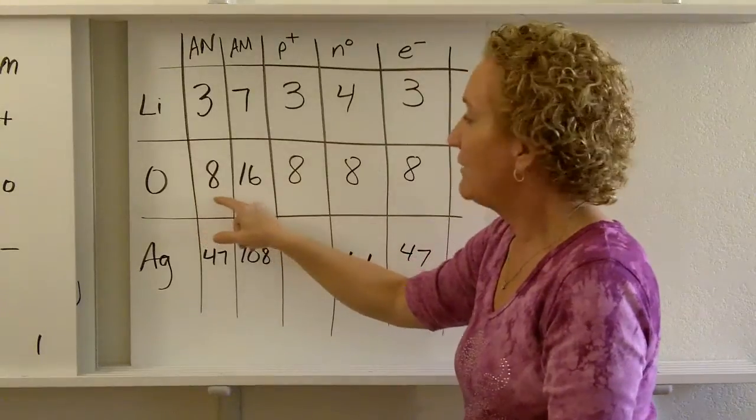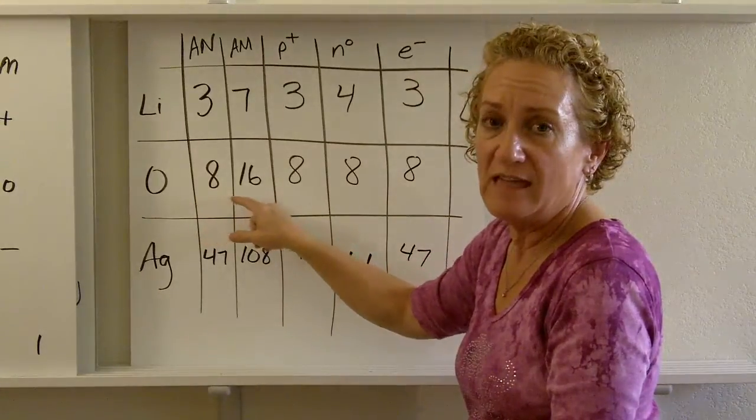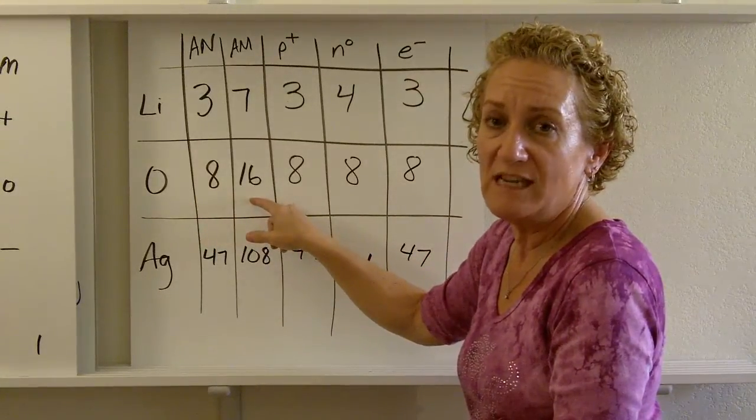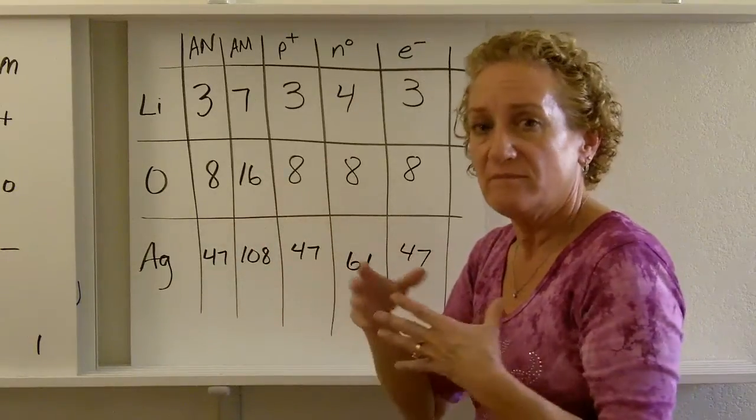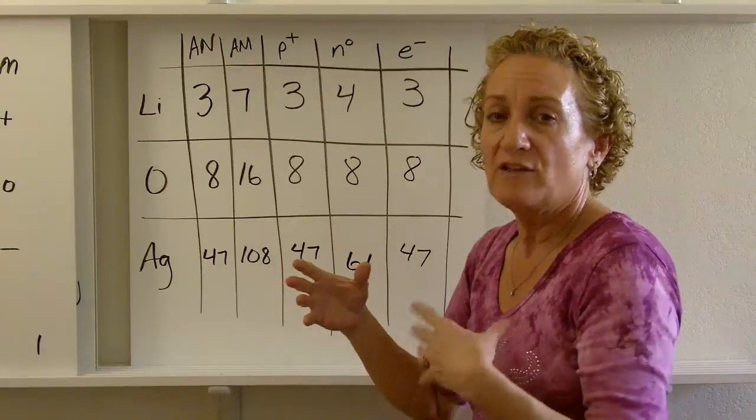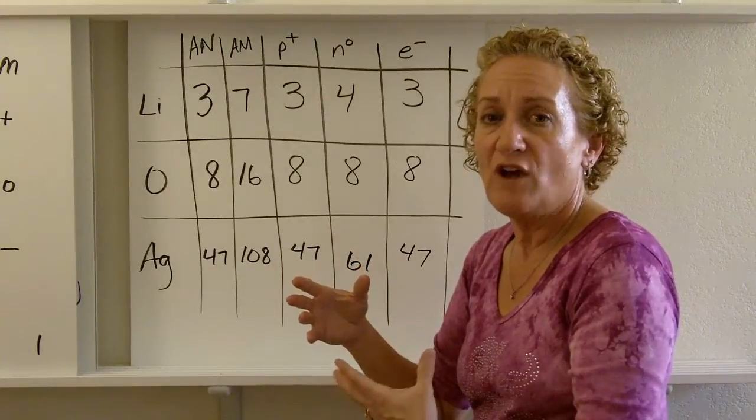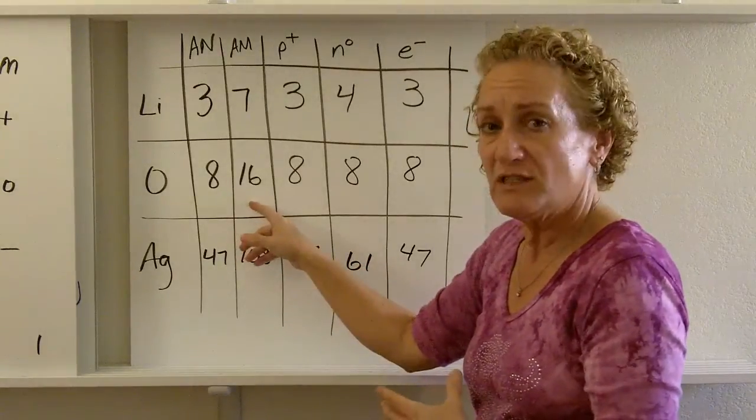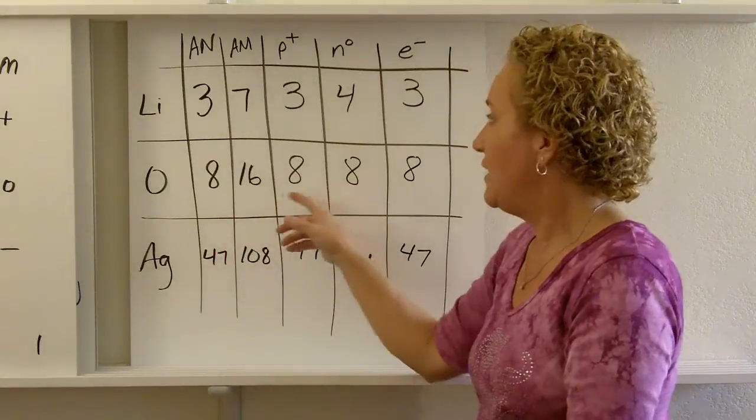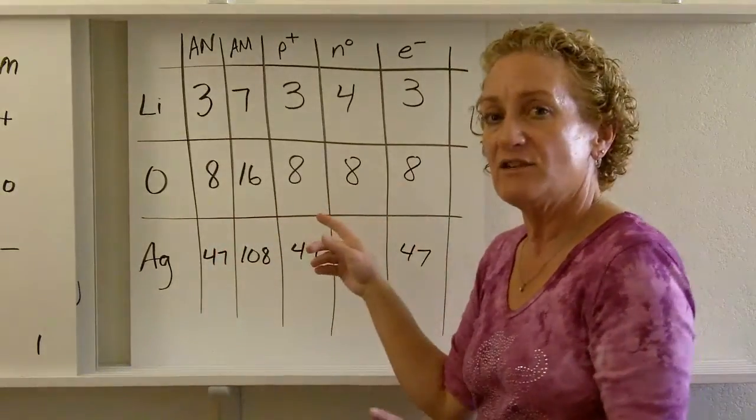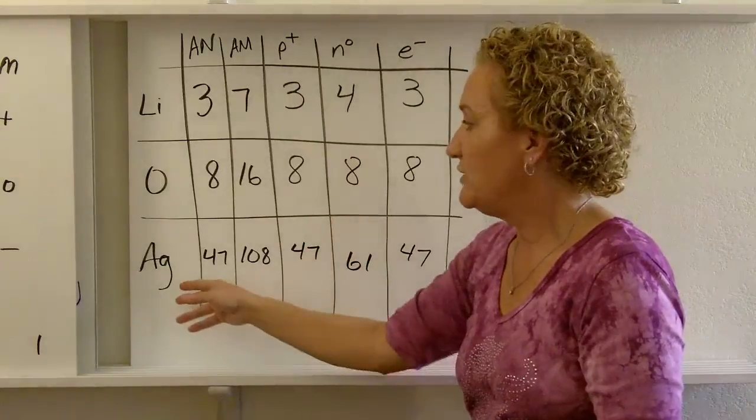Let's look at oxygen. Oxygen has an atomic number of 8 and an atomic mass of 16. That tells you right away you have 8 protons and 8 electrons. Every time. Now the number of neutrons, you have to take the mass, which is 16, minus the number, which is 8. 16 minus 8 is 8. So in this case they're all the same, but that doesn't always happen.